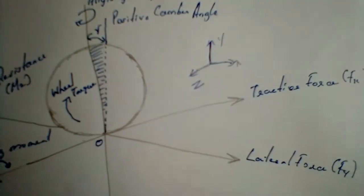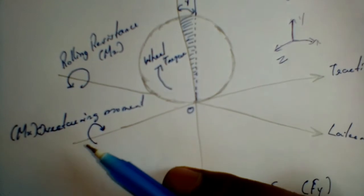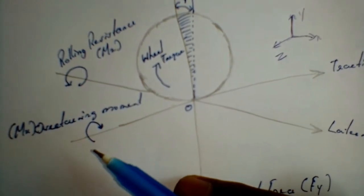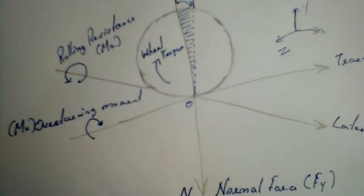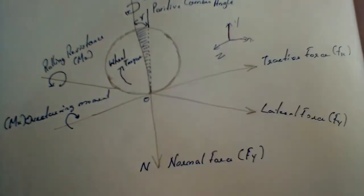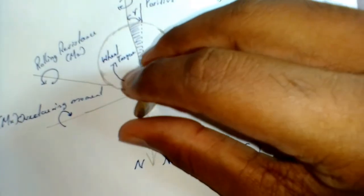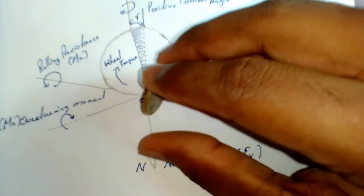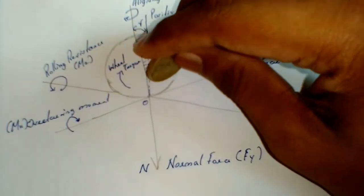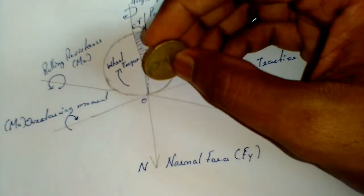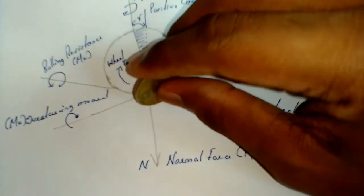The moment that corresponds here is the overturning moment, which is represented by MX, because it mostly happens due to the rollover of the vehicle or when the vehicle is tilted. If you consider this coin as a tire, the overturning moment will try to overturn the wheel — it will actually try to tilt the plane of the wheel. This is the overturning moment, and the tractive force in the X direction will make the tire rotate or move forward.